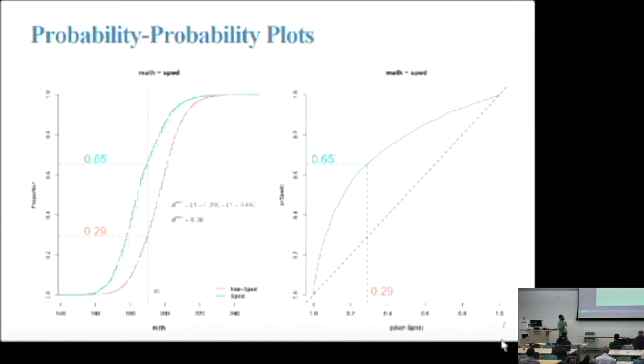You could transform that to standard deviation units. On the right, though, what we've done is we've taken these two empirical cumulative distribution functions and we've mapped them together. Now the non-SPED group is represented by the x-axis, and the special education group is represented by the y-axis. That same point of 190 is represented by one of those points on that curve. The overall effect size is really represented by the area under that curve. That diagonal line represents a reference line where if there was no difference in the achievement between these two groups, they would fall right on the reference line. Here we have a pretty big difference between the groups, which we would expect because it's special education and non-special education students.